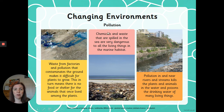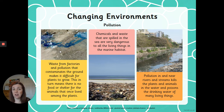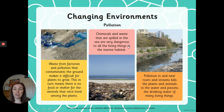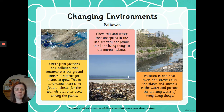Next: pollution. Waste from factories contaminates the ground and makes it difficult for plants to grow. This means there's no food or shelter for the animals that once lived among the plants. Because plants are at the very bottom of the food chain, when they're gone, whatever ate them has nothing to eat, and the problem goes all the way up the food chain. Chemicals and waste spilled in the sea are very dangerous to the marine habitat, and pollution in rivers and streams kills plants and animals and poisons the drinking water of many living things.